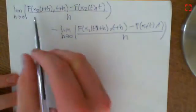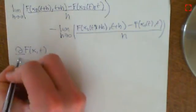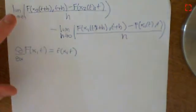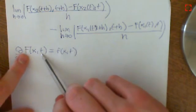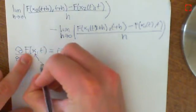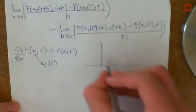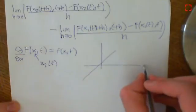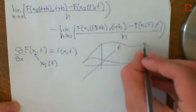We recall that the derivative of big F(x, t) with respect to x is little f(x, t). Now we ask: what is this limit? Effectively, we've taken big F(x, t) and substituted x2(t) in for x, making it a function of t alone. In multivariable calculus terms, we have a surface big F(x, t), and we've defined a curve x2(t) on it.